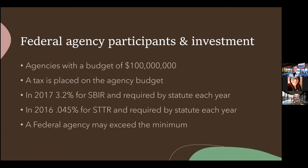Any agency with a budget over $100 million participates in the SBIR program, and as budgets fluctuate, so do SBIR budgets. A lot of times when we see changes in administration, we see heavy focus in certain agencies over others. So it's important to note that the budgets can really fluctuate on SBIR and STTR.